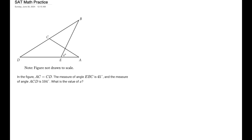So the question says: in the figure, AC equals CD, and the measure of angle EBC is 45 degrees — let's label that — and the measure of angle ACD is 104 degrees. What is the value of X in degrees? So the value of angle AEB is what we're trying to find.